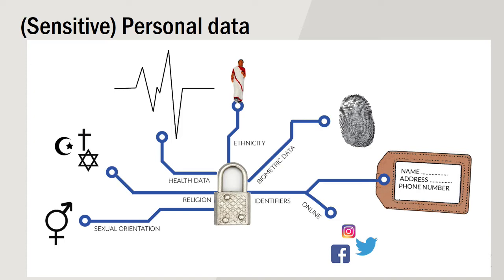As researchers in social sciences, it is likely that we will be collecting personal or even sensitive personal data. In social sciences, we often deal with sexual orientation, religion, health, ethnicity, and biometric data. For sure, at some point you will collect some identifiers such as names, addresses, or phone numbers. It is also likely that we will be collecting information from social media. This is why it is really important to think about what we are actually doing with this data.